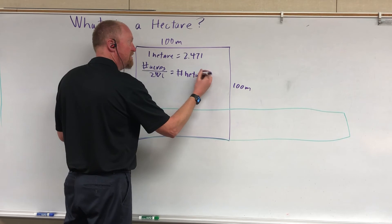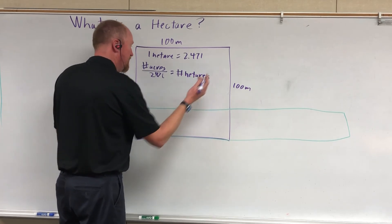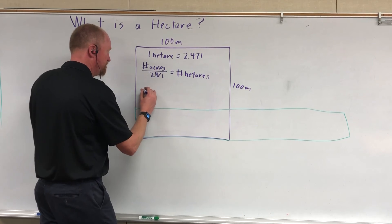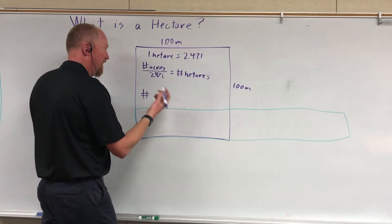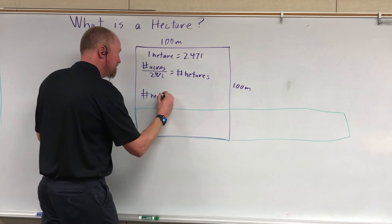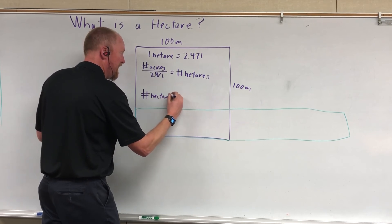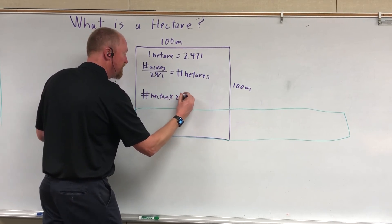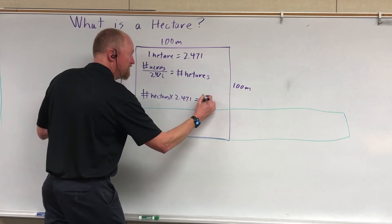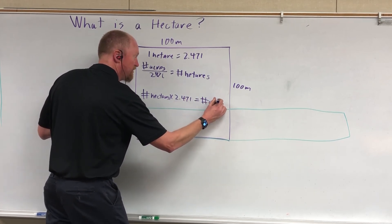Hectares are bigger, so you will end up with a smaller number. To go the other way, you take the number of hectares and multiply by 2.471, and that'll give you the number of acres.